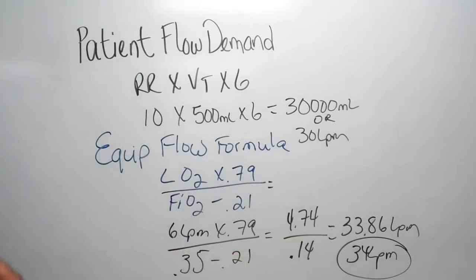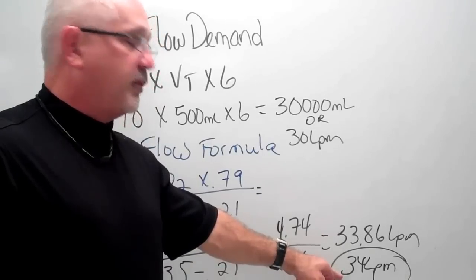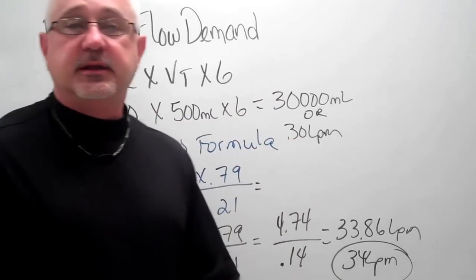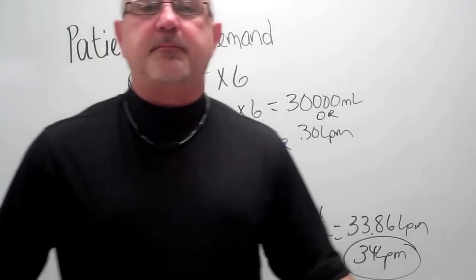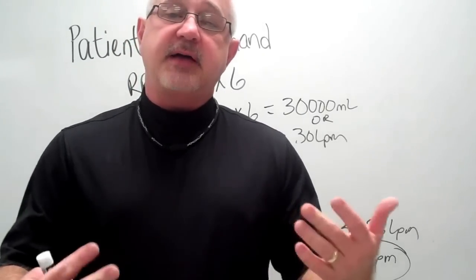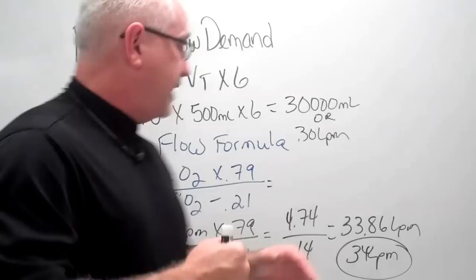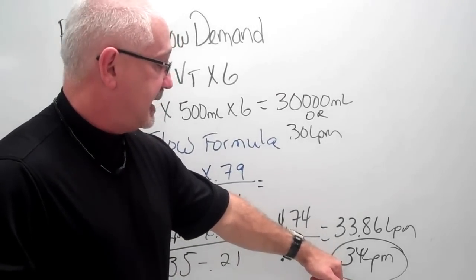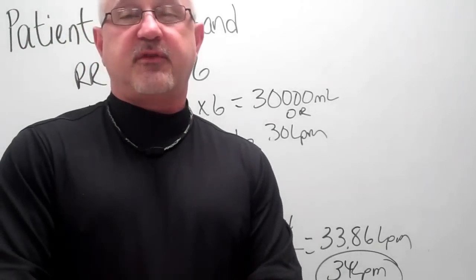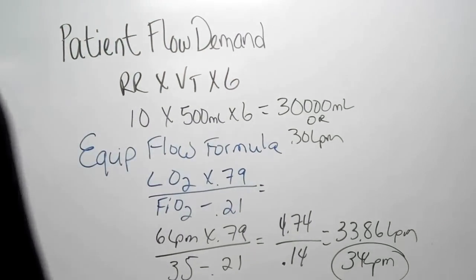So based on this example, our equipment has a total flow output of 34 liters per minute, and our patient's inspiratory flow demand was 30 liters per minute. Based on our definition of what a high flow device is, a high flow device meets or exceeds the patient's inspiratory flow demand. This device meets and exceeds the patient's inspiratory flow demand, so I would consider that 35% Venturi mask a high flow device. Thank you very much.